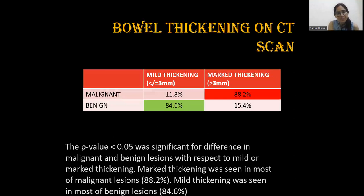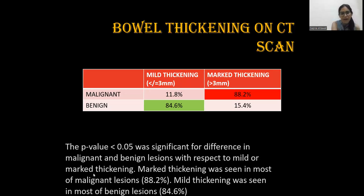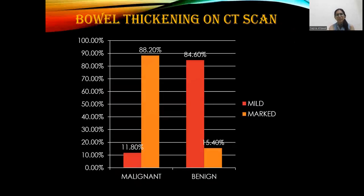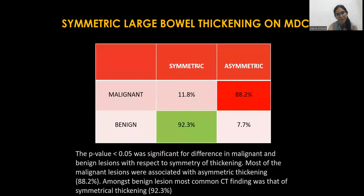Regarding bowel thickening on CT scan, the p-value was less than 0.05, which is statistically significant for the difference between malignant and benign lesions with respect to mild or marked thickening. Marked thickening was seen in most malignant lesion cases, while mild thickening was seen in most benign lesions. As shown in the bar chart, 88.2% of malignant lesion cases showed marked thickening, while 84.6% of benign lesion cases showed mild thickening.